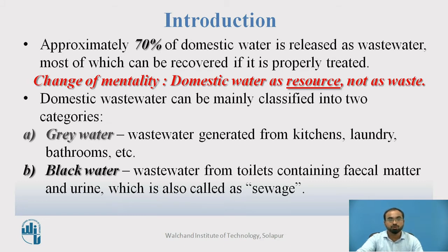Domestic wastewater is mainly classified into two categories. One is grey water — the water which is generated from kitchens, laundry, bathrooms, etc. And another one is black water — the wastewater coming out from toilets, which contains a large amount of fecal matter and urine, also called sewage.